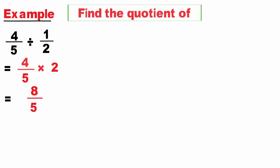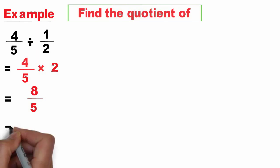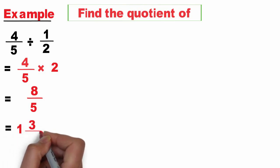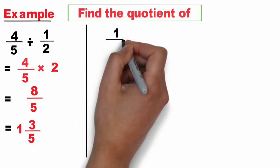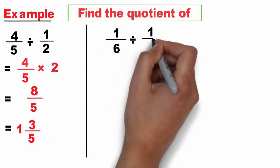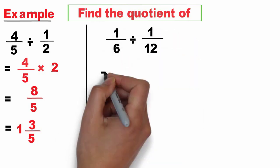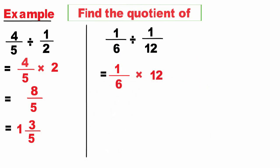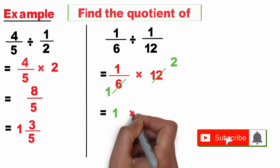So the quotient is 8 over 5. Since 8 over 5 is an improper fraction, we can write it as 1 and 3 over 5. Second example: 1 over 6 divided by 1 over 12. Keep 1 over 6, multiply by the reciprocal of the second, which is 12 over 1. Cancel out common factors: divided by 6 equals 1, divided by 6 equals 2. It will be 1 times 2 equals 2.